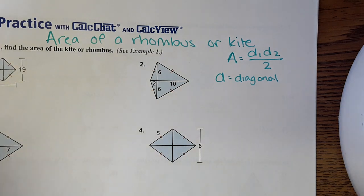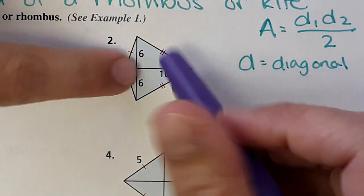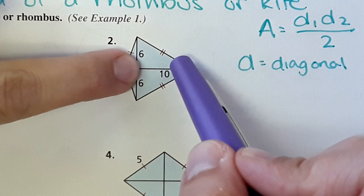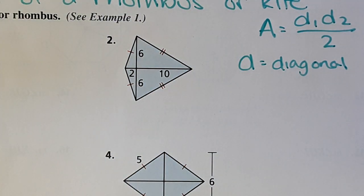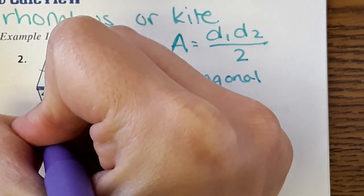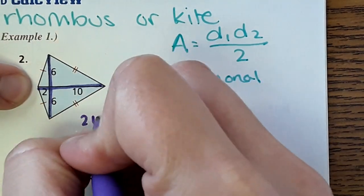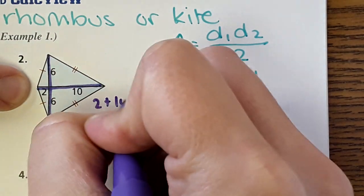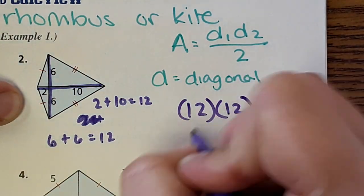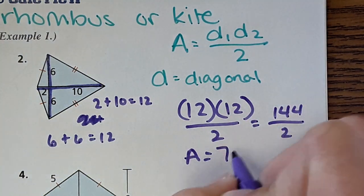Let me make this equation make sense so you'll remember what to do. In number 2 we see a kite, and in this kite you can see that there are actually four triangles. If you wanted to find the area of each triangle individually you could — just do base times height divided by 2. Or you can shortcut it using this equation: diagonal 1 times diagonal 2 divided by 2, finding the area of all those triangles at the same time. So 2 plus 10 equals 12, and 6 plus 6 equals 12. So 12 times 12 divided by 2 is 144 divided by 2, and the area is 72 units squared.